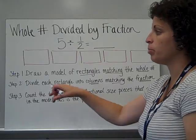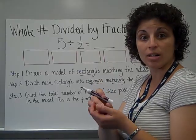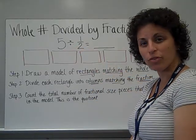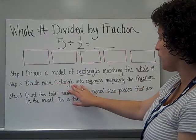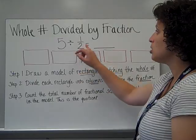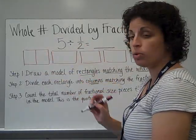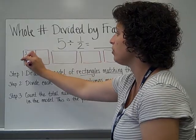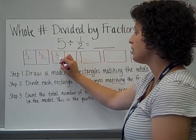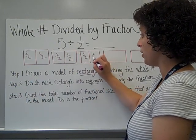My second step — before, I circled groups of 3 because we were dividing by 3. This time, I'm dividing by half. So I have to go to each rectangle and cut it into columns matching the fraction. So for 1 half, I need to cut each rectangle into 2 equal parts — this would be 1 half and this would be 1 half. And I need to do that to every single rectangle in my model.